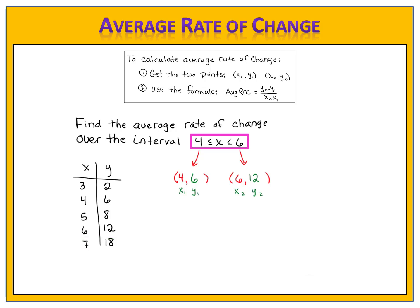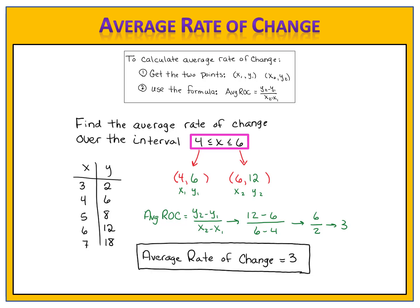We label those points x1, y1 and x2, y2. Then we write the formula: average rate of change equals y2 minus y1 divided by x2 minus x1. We substitute the numbers into the formula — y2 minus y1 is 12 minus 6, and x2 minus x1 is 6 minus 4. We do the computation and get 6 over 2. Simplify the fraction: 6 divided by 2 is simply 3. So the average rate of change for this function, between 4 and 6, is 3.